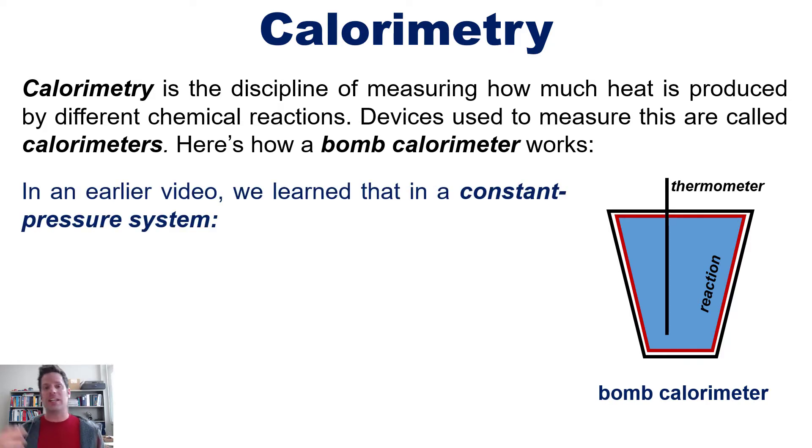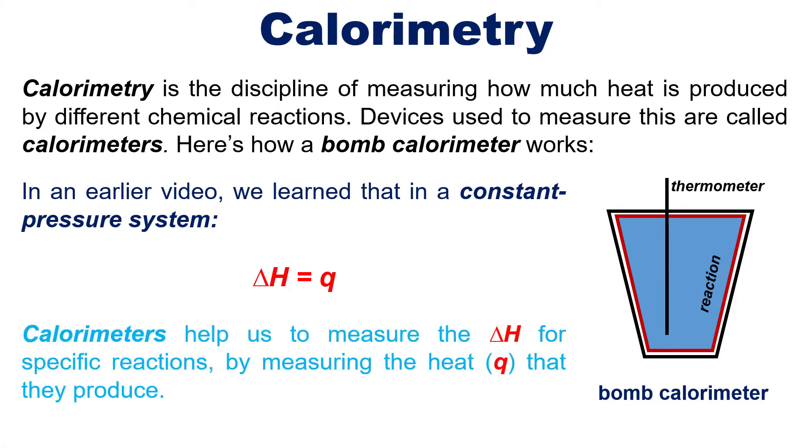Now in an earlier video linked to in the description below as well as floating over my head here somewhere, we learned that in a constant pressure system delta H or change in enthalpy is equal to Q, heat, or as I like to call it, quete. Calorimeters help us to measure the delta H or change in enthalpy for specific reactions by measuring the heat or Q that those reactions produce.